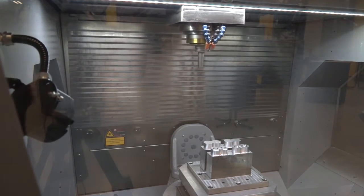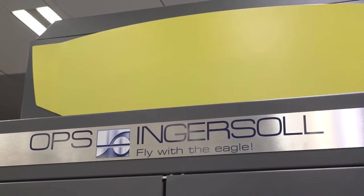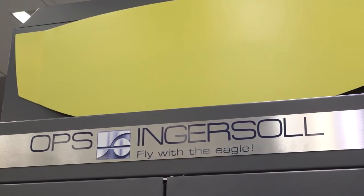What's the build quality of the machine? What's the base made of? The base is made of what we call FEM, it's a polymer concrete style casting, but we still maintain the steel casting in the gantry design as is traditional with all OPS Ingersoll machines.